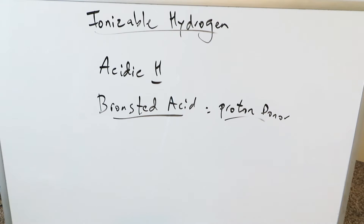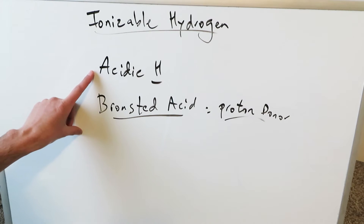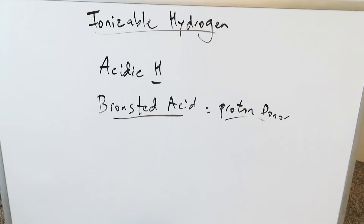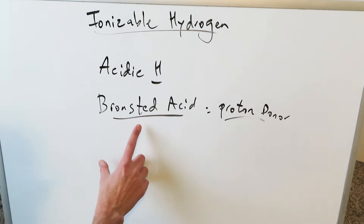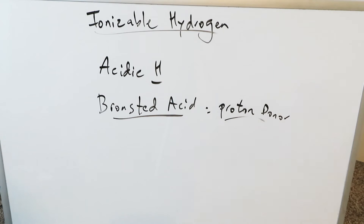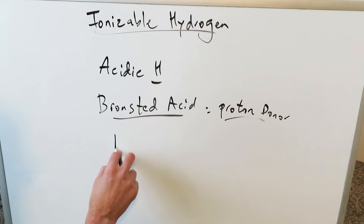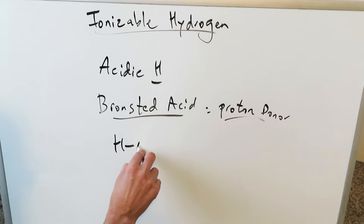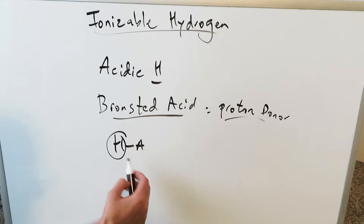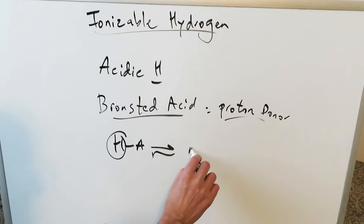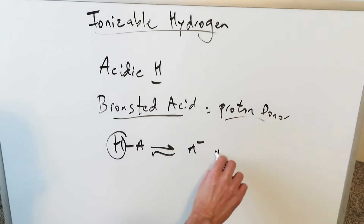In this video we are looking at the concept of the ionizable hydrogen, which you can also call the acidic hydrogen. Thinking about a Brønsted acid — a compound which acts as a proton donor — if you have the simplest compound HA, this hydrogen right here is your ionizable hydrogen.